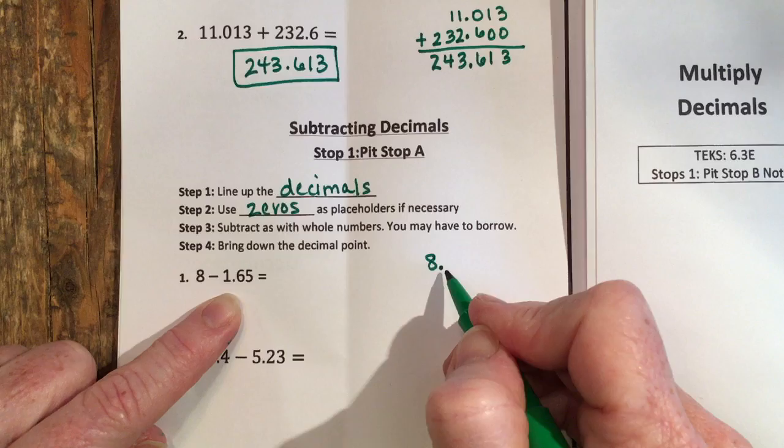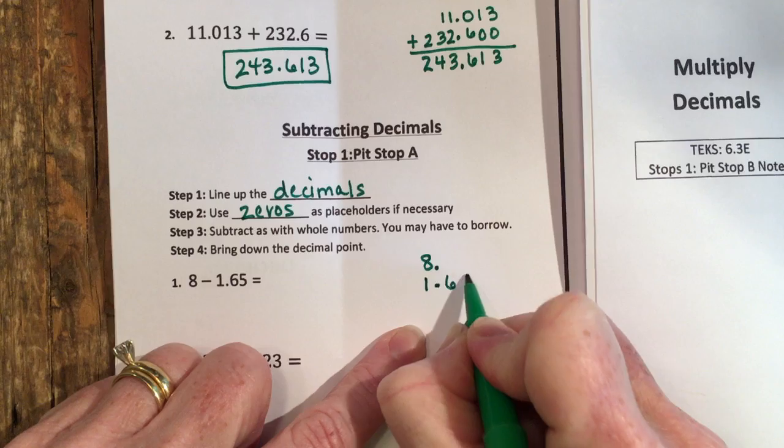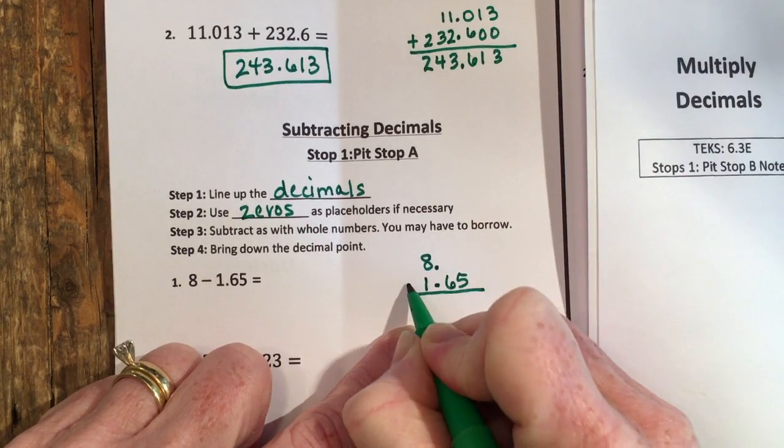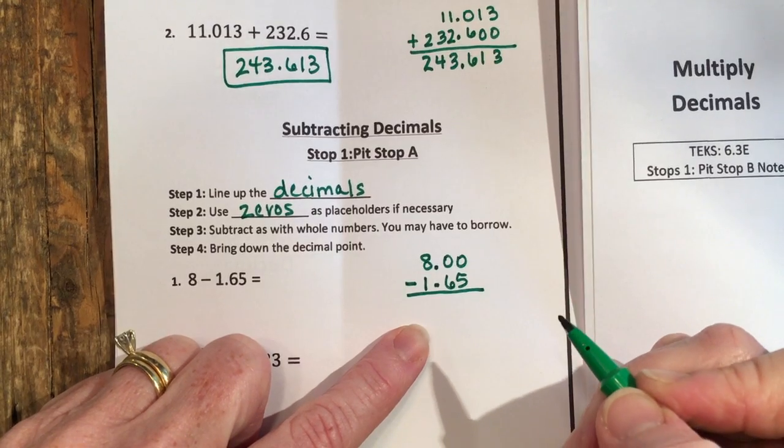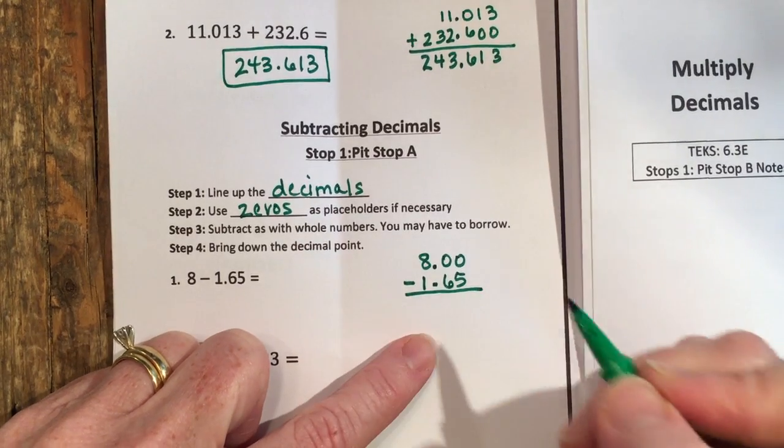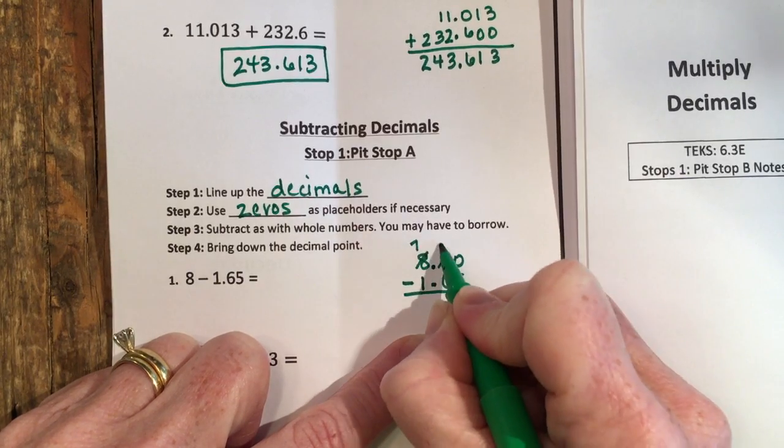Then I can line up the 1.65. I'm subtracting, so I'm going to need some zeros here in order to have something to subtract from. This is where I need to be careful borrowing. I have to go all the way to the 8. That makes this a 7 and 9 and a 10.